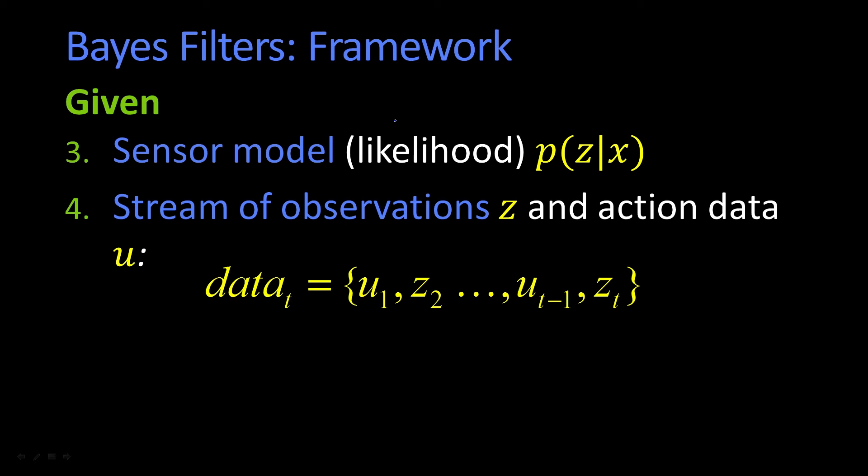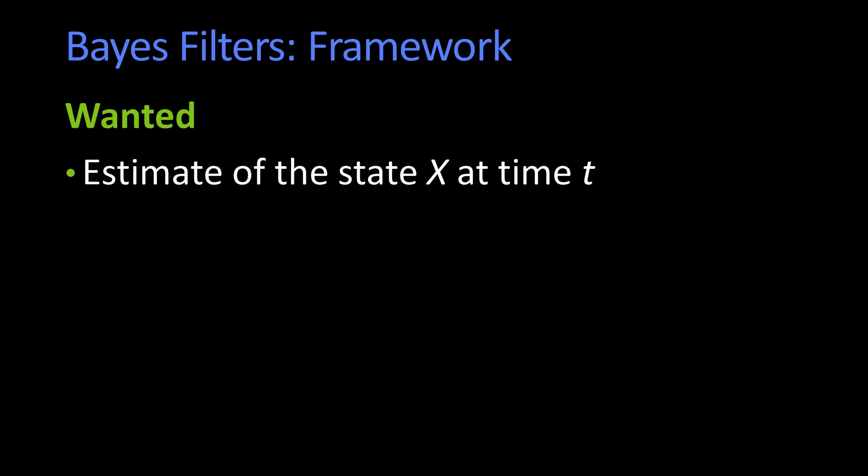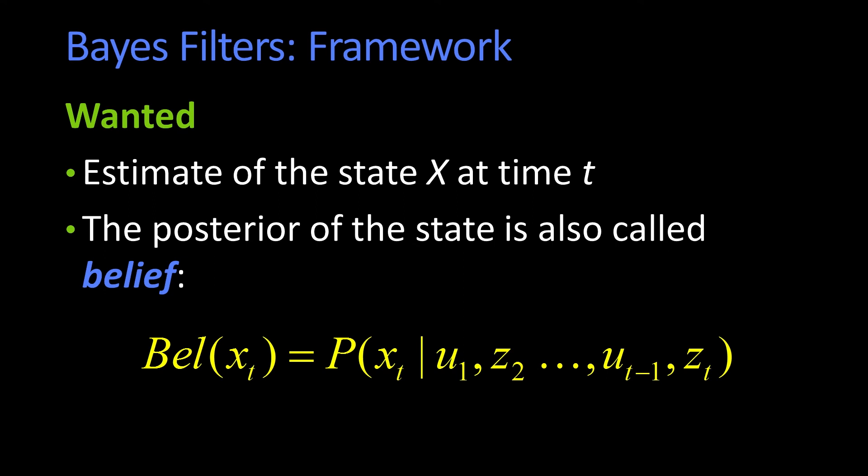What do we want? Well, what we want is the estimate of x at time t. Same thing we've always wanted, since we were little children. And in the Bayesian world, this is called the belief, or the posterior of the state. And so, sometimes it's even written like this, B-E-L for belief of xt. What's my belief about xt? Given everything that I've observed so far, knowing all the perturbations, and given my current measurement.